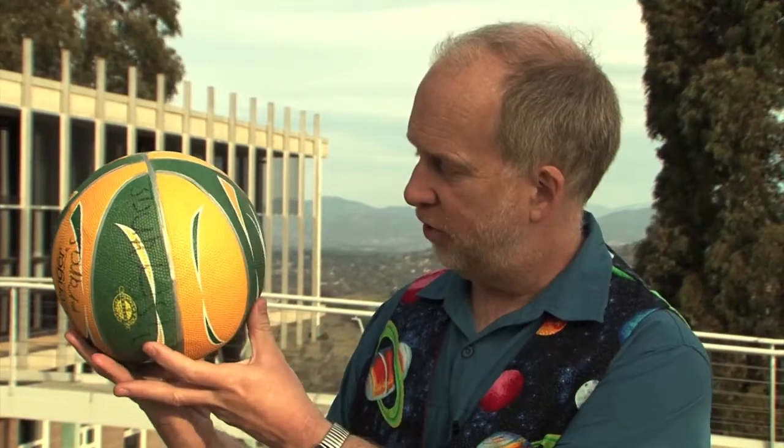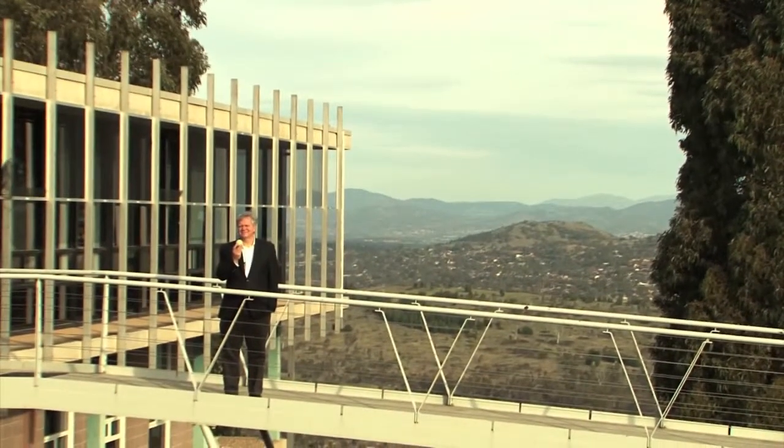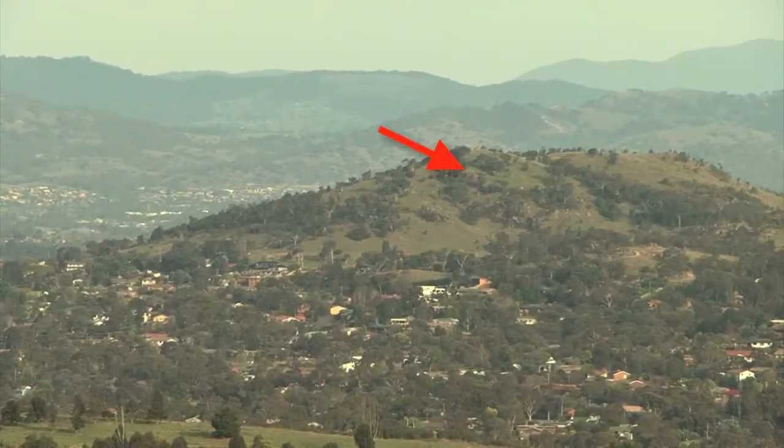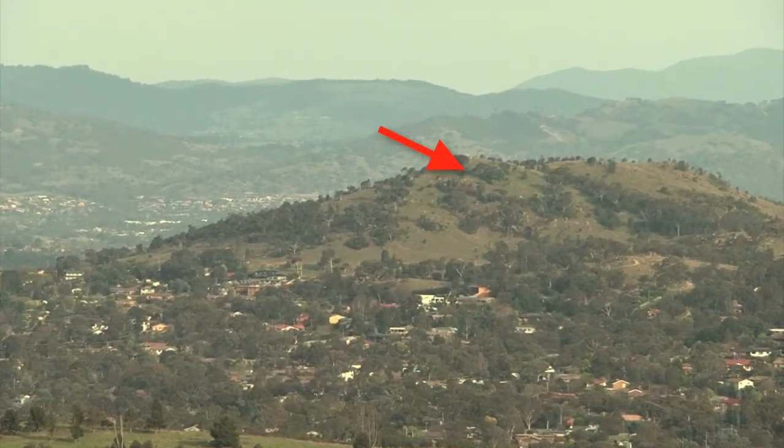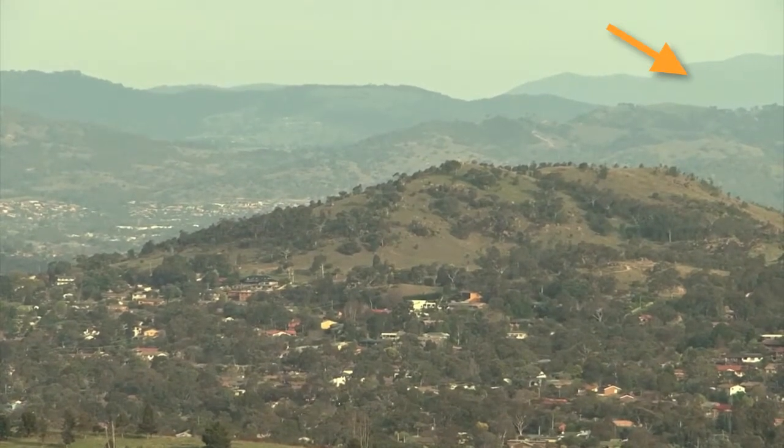As our scale, imagine the Earth is this size, the size of this ball. To that scale, the moon would be the size of a tennis ball, about 10 meters away. Jupiter would be the size of a major office building on that hill. Pluto would be about twice as far away as this mountain. That's the solar system.